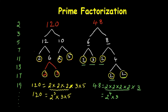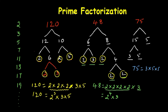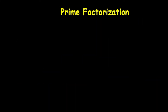One more number I'm going to take is 75. We can divide 75 as 15 times 5, and again 15 can be written as 3 times 5, because 15 is not a prime number. You can observe that 3, 5, and 5 are all prime numbers. So 75 can be written as 3 times 5 times 5, and its exponential form is 3 times 5 squared.